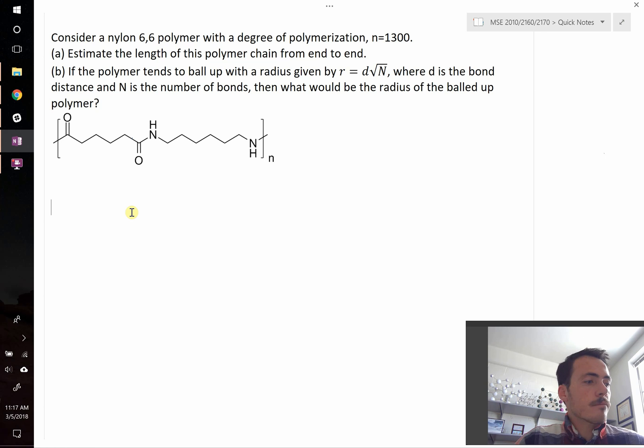So let's start with part A. To do part A, we need to answer a couple questions first. First off, we need to know what is the type of bonds along this chain, and then how long are those, and what are the angles associated with those?